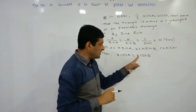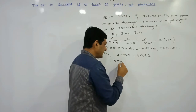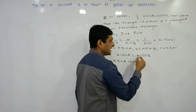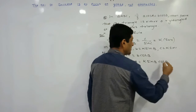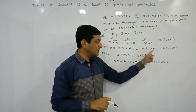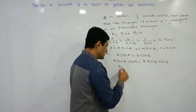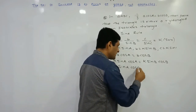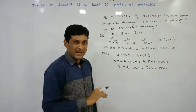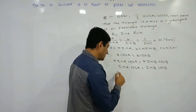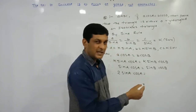Substituting into the given equation a·cos A = b·cos B: we replace a with k·sin A and b with k·sin B, giving k·sin A · cos A = k·sin B · cos B. Cancelling k from both sides: sin A · cos A = sin B · cos B. Multiplying both sides by 2: 2·sin A · cos A = 2·sin B · cos B.